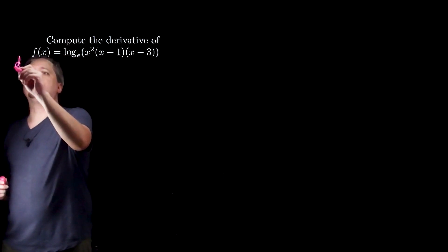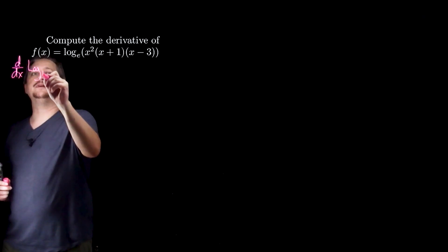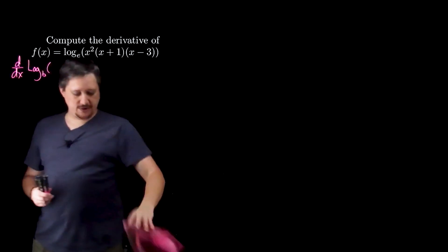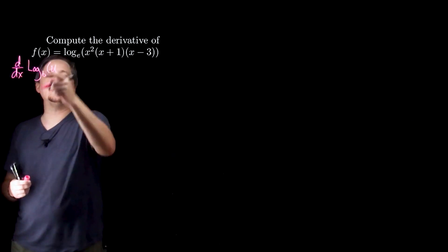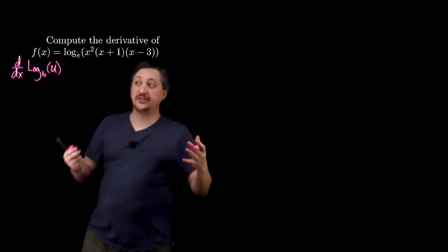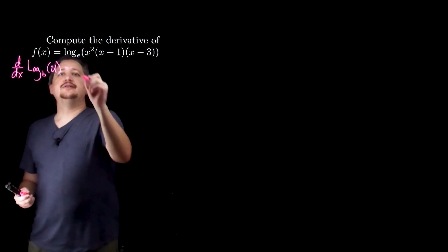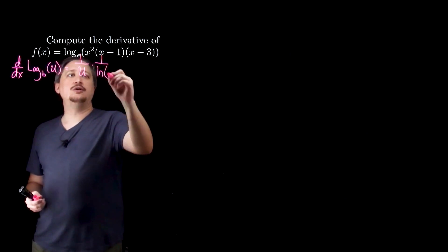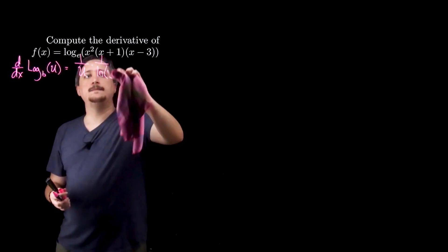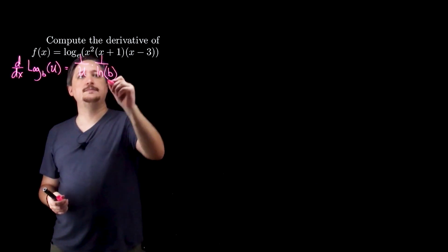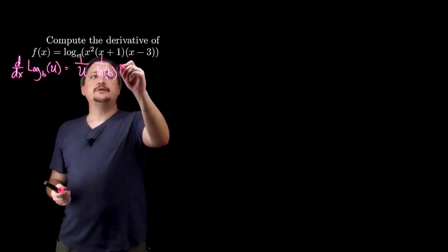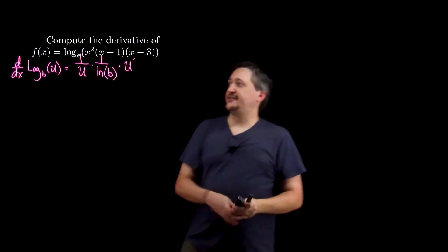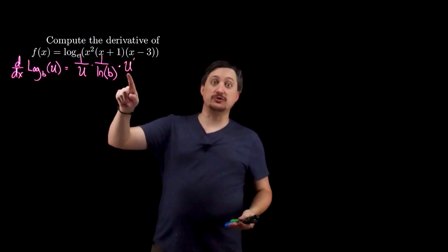In general, if we're going to take the derivative with respect to x of some log base b of u — where u might even be a function of x — this is going to be 1 over that thing times 1 over natural log of the base, times u prime because of the chain rule. So this is saying basically if it's not just x, then I have to include the chain rule.